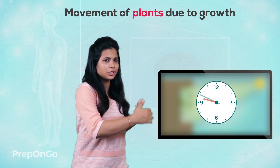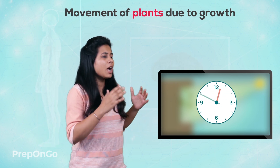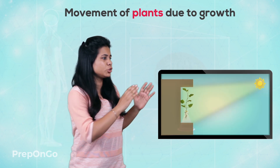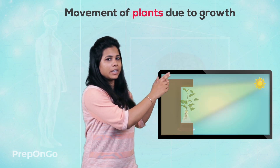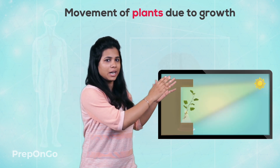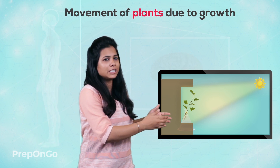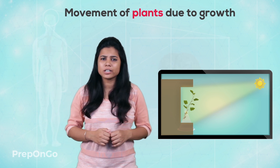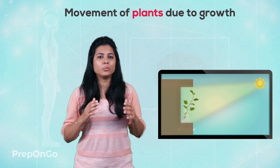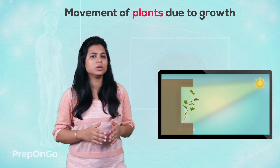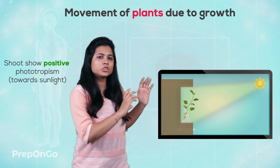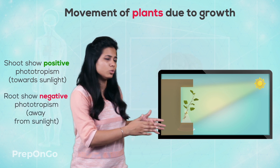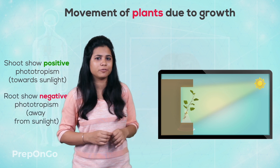Let's fast forward a few days, as we have to keep this setup for several days. After few days you will see that the shoot bends towards the direction of sunlight and the root bends away from the sunlight. So what we can conclude from this is that the shoot shows positive phototropism and the root shows negative phototropism.